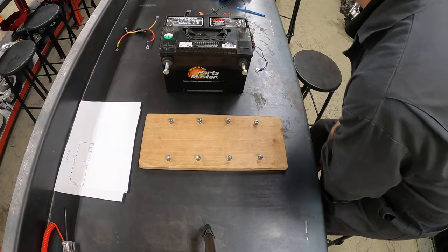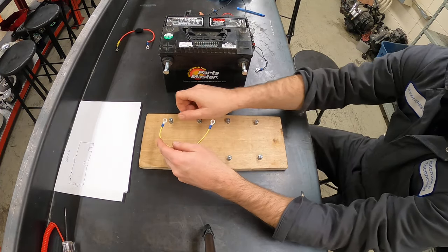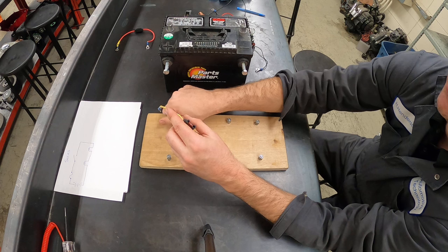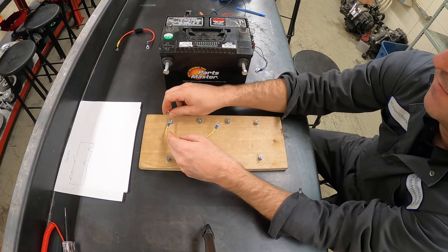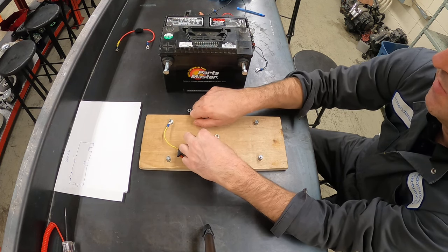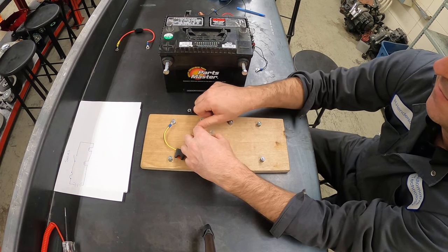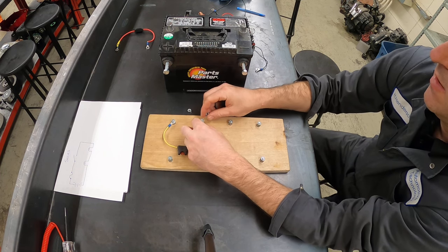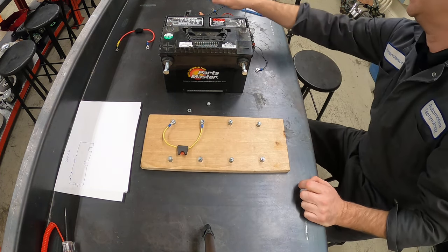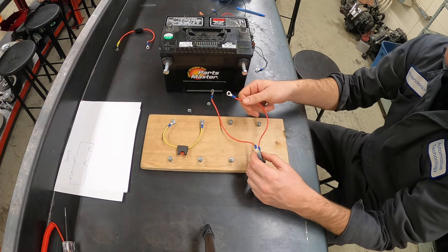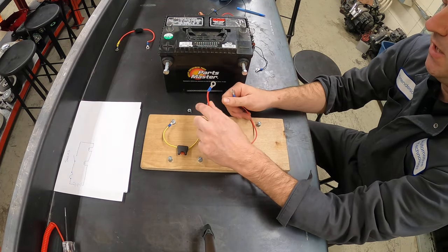So first off I'm going to hook up a fuse. I've got an inline 10 amp fuse right here and that should be good there. The fuse is going to feed my switch, so I've got a rocker switch here. It should work just great.